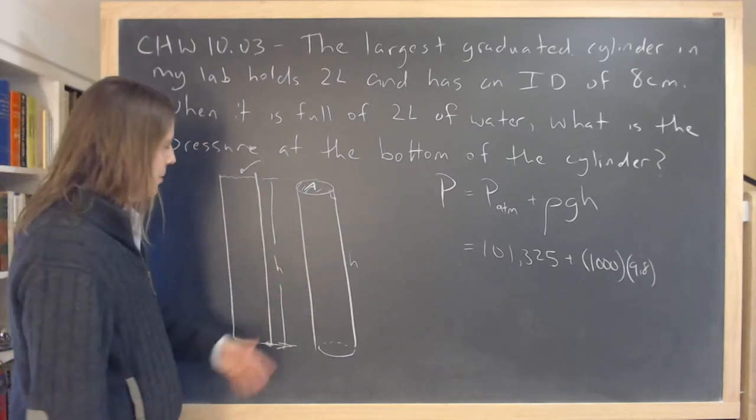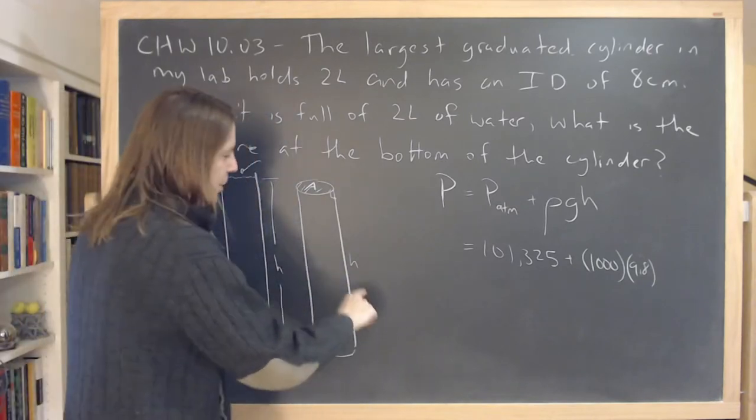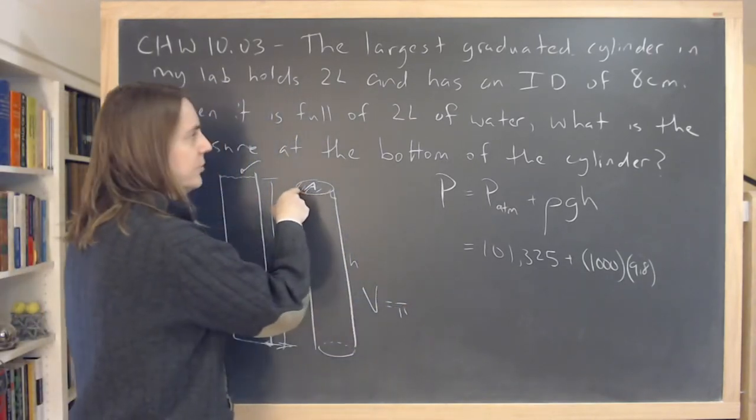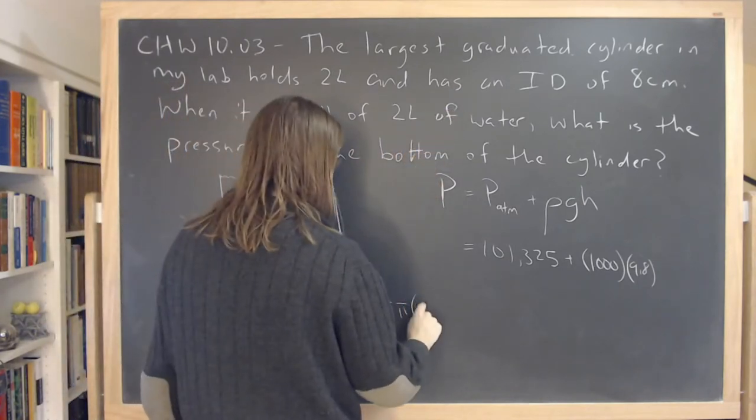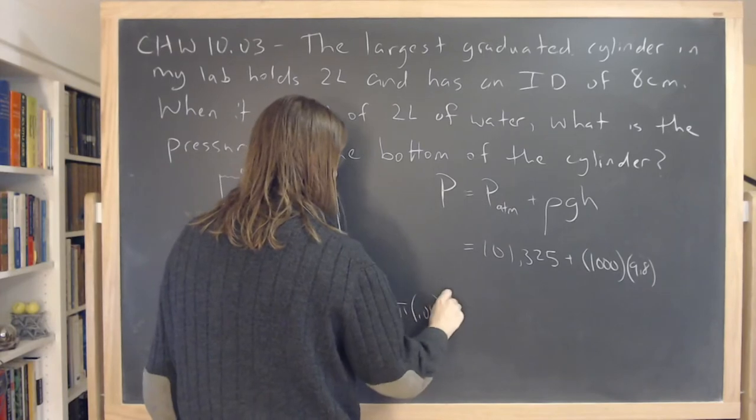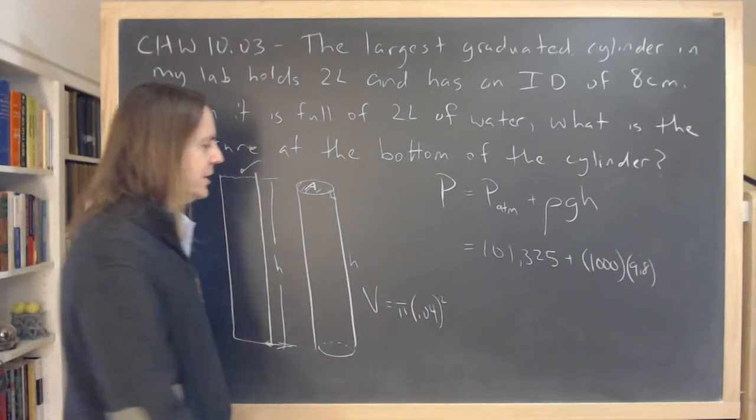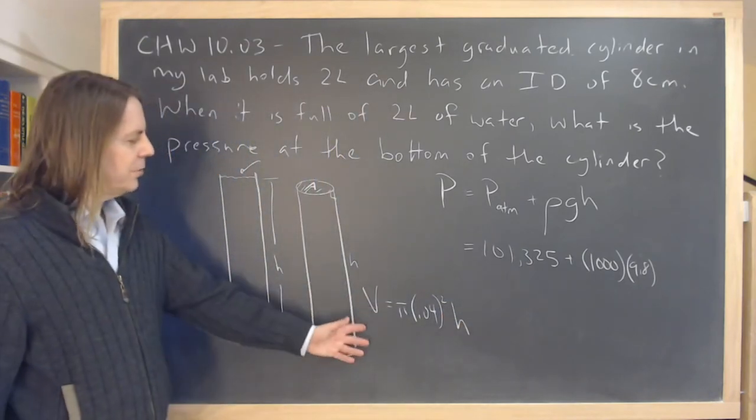So the volume here would be, let me write it over here. The volume would be V is π times R squared. So that's that area. So that's 0.04 meters is the radius, πR² times H, which we're looking for. We need to know the volume.